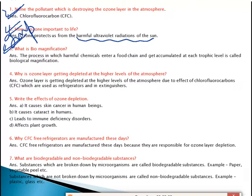Next: what is biomagnification? In biomagnification, harmful chemicals get accumulated at a particular trophic level, which is very harmful for the organisms living there. Biomagnification is a process in which harmful chemicals enter the food chain and get accumulated at each trophic level. Remember: in biomagnification, harmful chemicals accumulate at each trophic level.